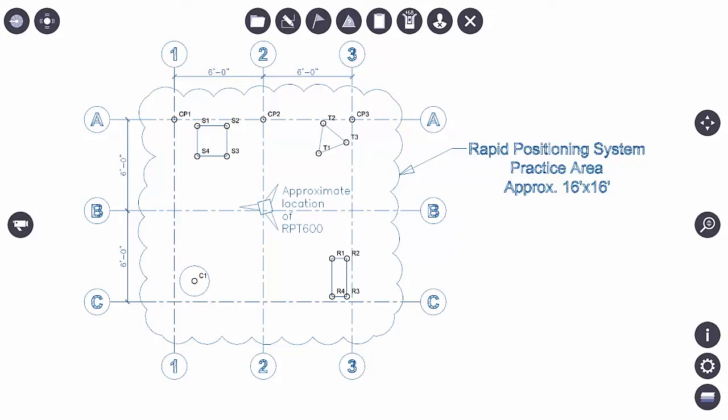Shooting in control points. The first thing we need to do is establish the robot's position on the job site. Sometimes this is called a resection.